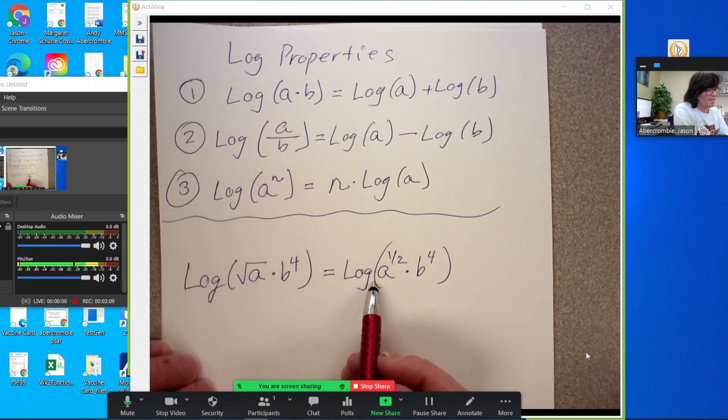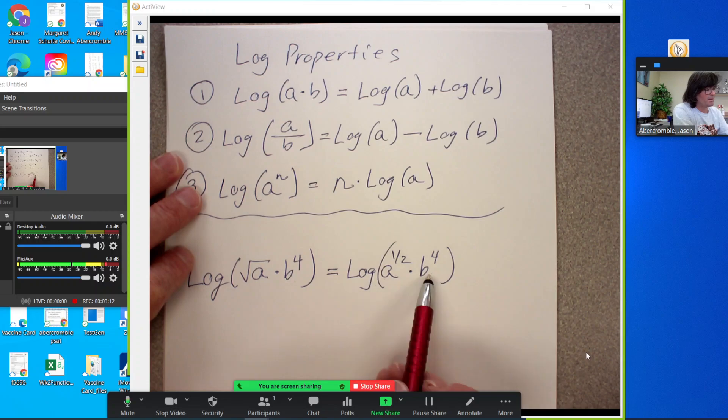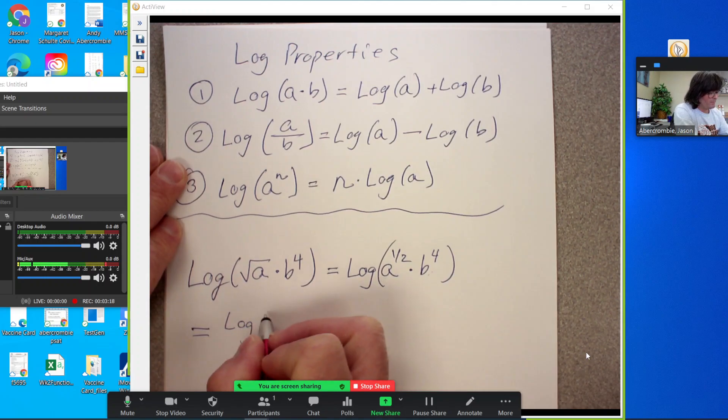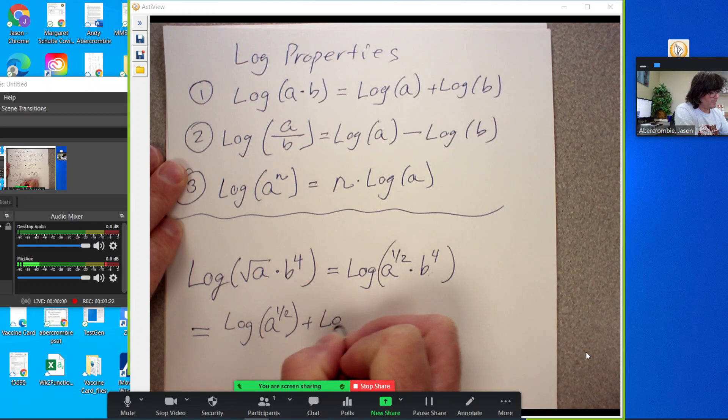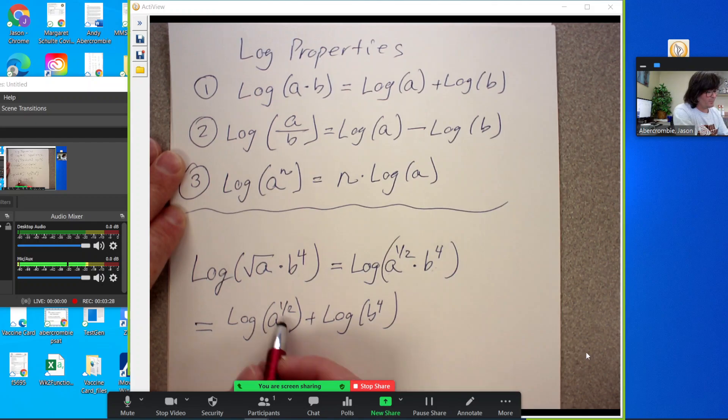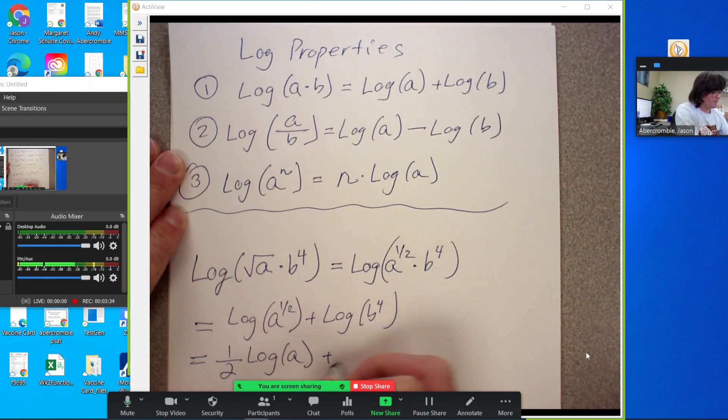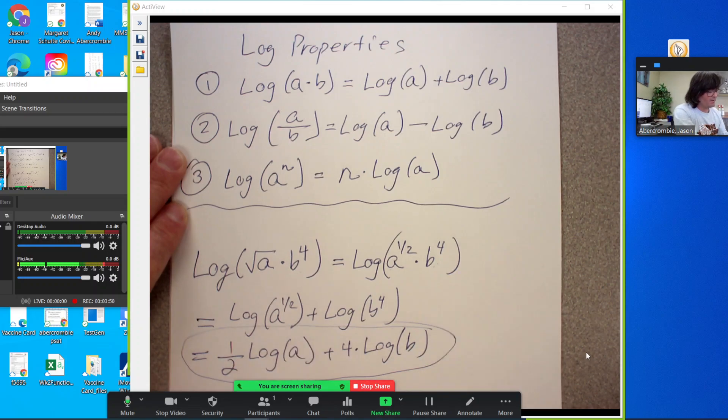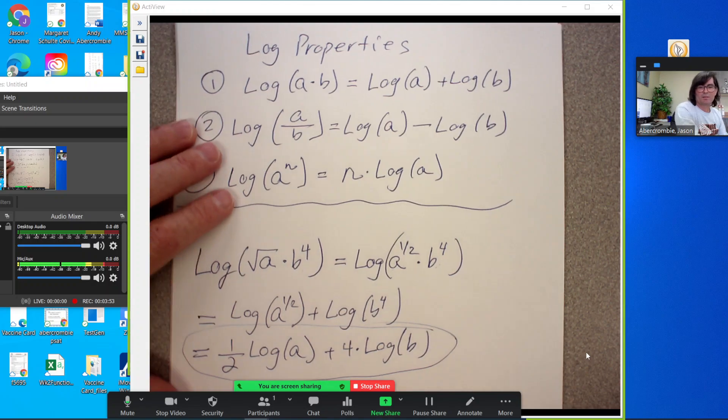The first issue here is I have multiplication, log of something times something, something times something is plus. So that's going to be log of a to the one half plus log of b to the fourth. And then we can bring the exponents down in front. So one half log of a and then four times log of b. When do you know you're done? You know you're done when you just have one item inside each log and nothing else, no powers, no other variables. So this is the most expanded that I can have for this particular expression.